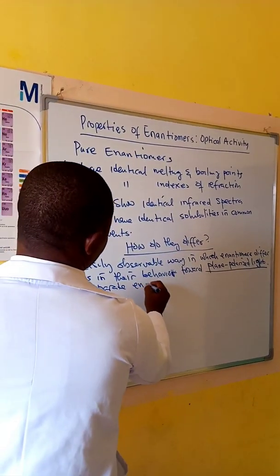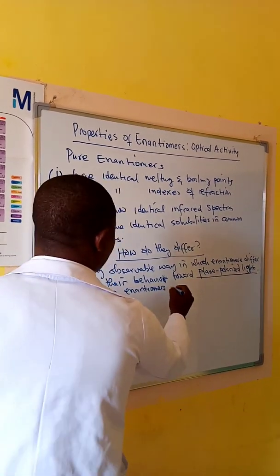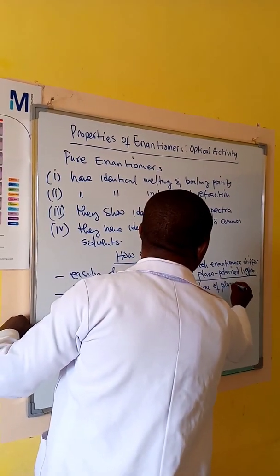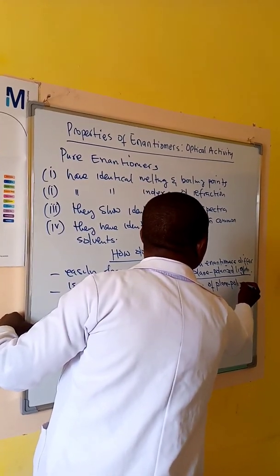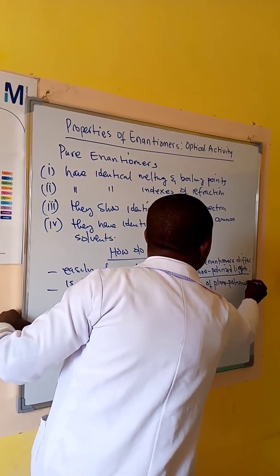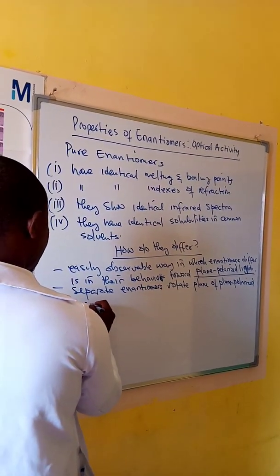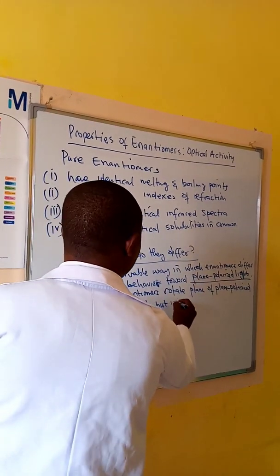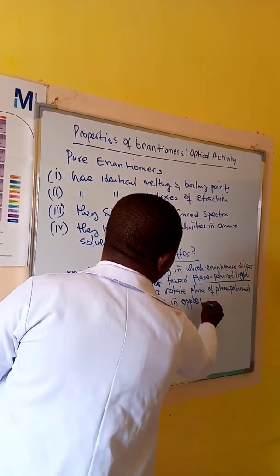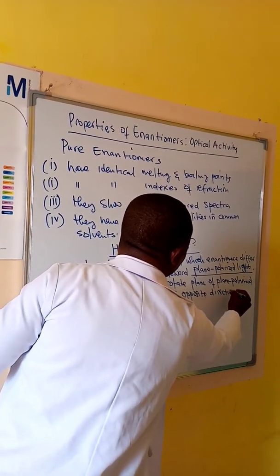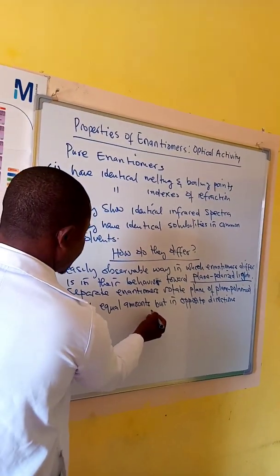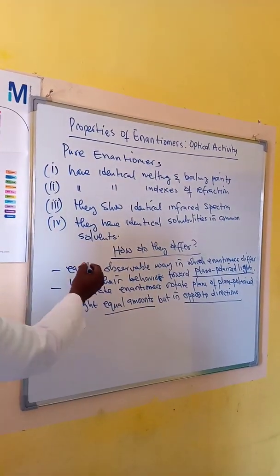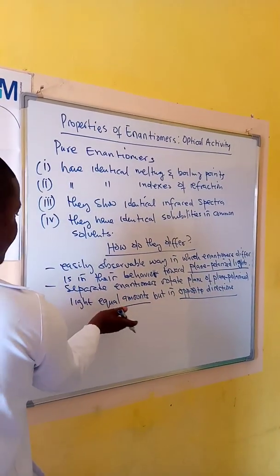Separate enantiomers rotate plane of plane polarized light equal amounts but in opposite directions. So this is the key point.